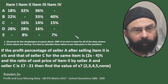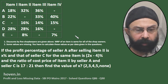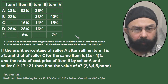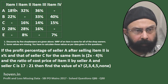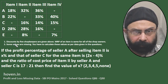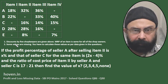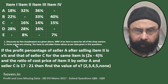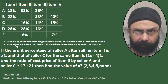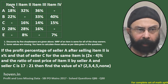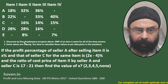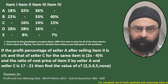This Profit and Loss question has been taken from SBI PO Mains 2017 memory-based questions. This table along with two facts has been given to us. Following this table and these facts, there are five questions that we have to answer. We will take all of them one by one. With each question I will show this table so that we can refer to it along with the question.